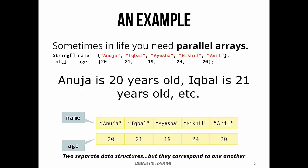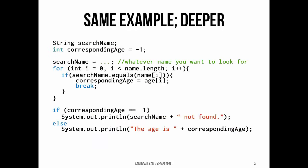Even though these are two separate data structures, I can tell Anuja's 20 years old, Iqbal is 21 years old, because they share indices. There are tons of other uses for parallel arrays, but let's just keep going with this example.